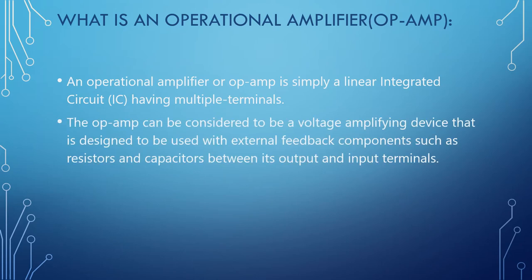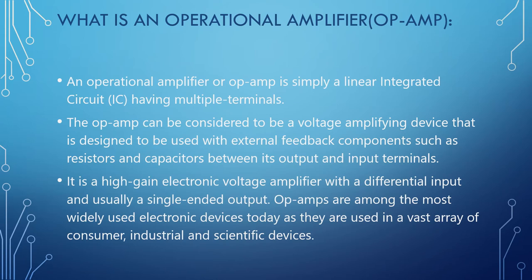The main application of op-amp, as the name suggests, is as an amplifying device and it is usually used to amplify voltages. It is usually designed to be used with external feedback components such as resistors and capacitors. It is a high-gain electronic voltage amplifier, with a gain in the order of 10 to the power 5 to 10 to the power 6, with a differential input and usually single-ended output.